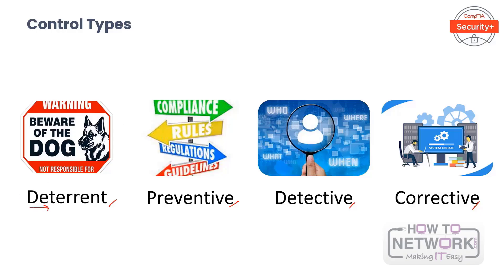The first control type is deterrent. Deterrent controls are intended to discourage individuals from intentionally violating information security policies or procedures. Deterrents do not necessarily have to be designed to stop unauthorized access — as the name implies, these controls help deter access. They usually take the form of a punishment or consequence that makes performing unauthorized activities undesirable. An example is a warning indicating that systems are being monitored — or like a 'beware of dog' sign posted by someone who doesn't actually have a dog.